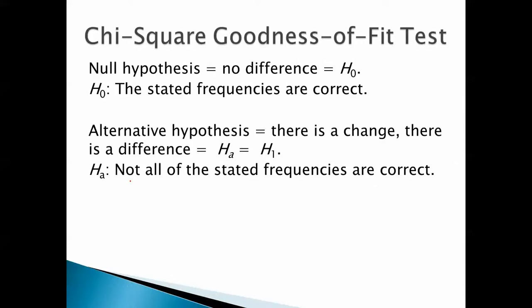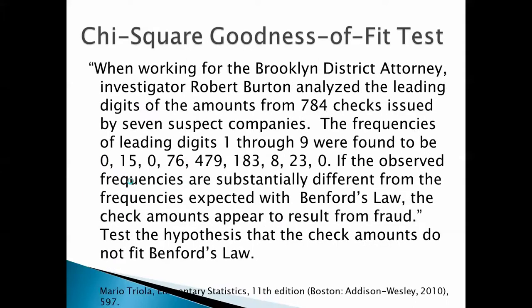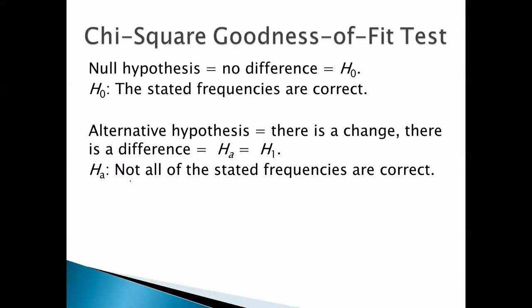Find null and alternative hypotheses. The null hypothesis is that there is no difference. The stated frequencies are correct. We mean, in other words, these frequencies. Yeah, those are the frequencies of the leading digits in the checks we're looking at. The alternative hypothesis is that there is a change, there is a difference. Not all of the stated frequencies are correct.